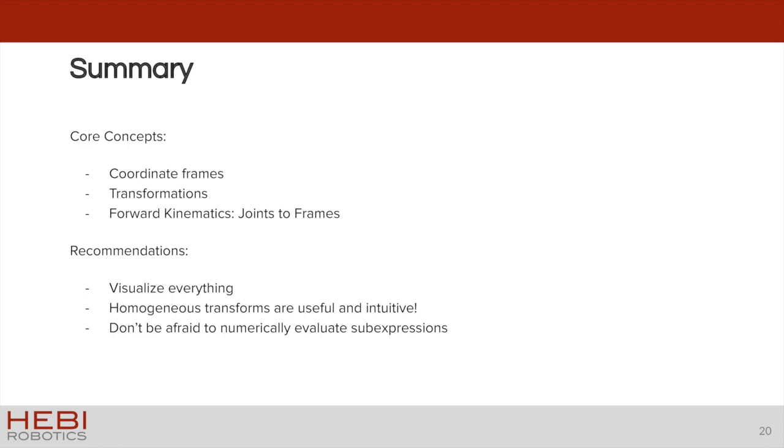So finally, I just want to thank you for listening, and briefly we covered what kinematics are for robots and some of the core concepts of coordinate frames, transformations, and forward kinematics here. And we also brought our recommendations for visualizing everything when you're trying to debug your kinematics, using 4x4 homogeneous transform matrices as a convenient, intuitive, and useful representation. And don't be afraid to numerically evaluate sub-expressions instead of trying to find a giant analytic expression that might be a little faster.